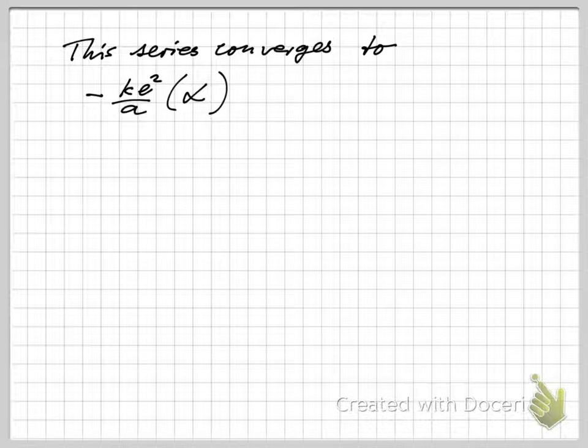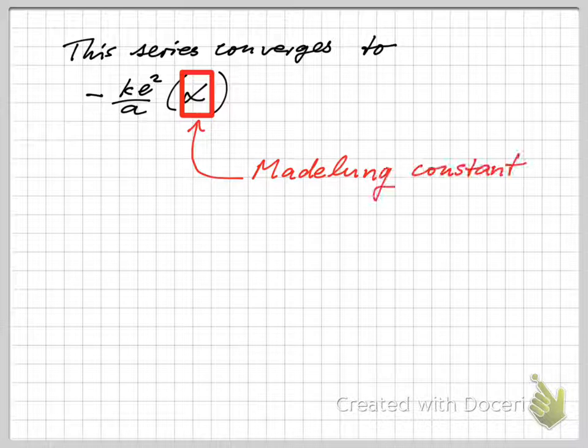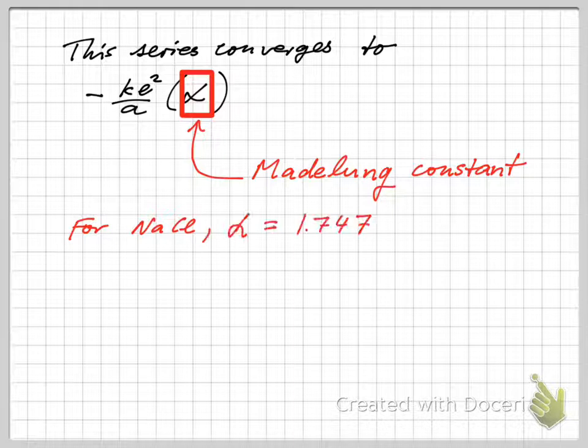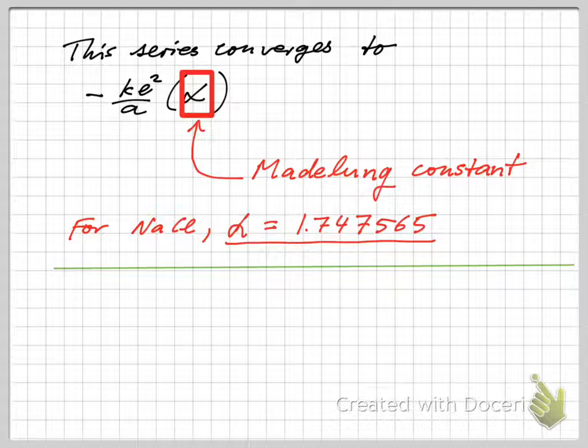Maybe surprisingly, this series does converge, and it converges to a number minus ke squared over a times alpha, where alpha is called the Madelung constant. Someone actually computed that convergence, and we get 1.747565 for this particular crystalline structure.